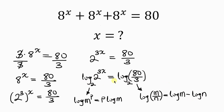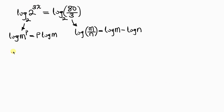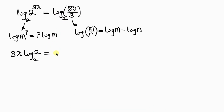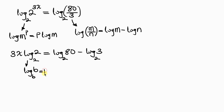So let's apply this to what we have here. The left-hand side can be written as 3x log 2 base 2, and this is equal to the right-hand side written as log 80 base 2 minus log 3 base 2. Now we apply the law that says when I have a log of a number which is the same as the base — log b base b — this is equal to 1. That means log 2 base 2 is 1, so 3x times 1 is 3x, and this equals log 80 base 2 minus log 3 base 2.